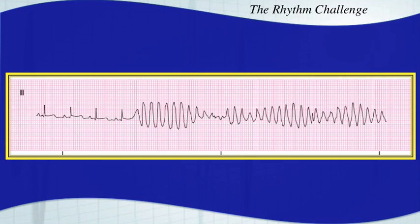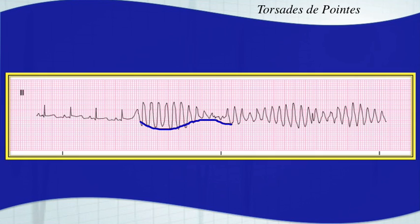You have two different types of rhythms here. You have a sinus rhythm that goes into torsades de pointes. A very clear bow tie effect, and it did happen because of an R-on-T phenomenon. Torsades.